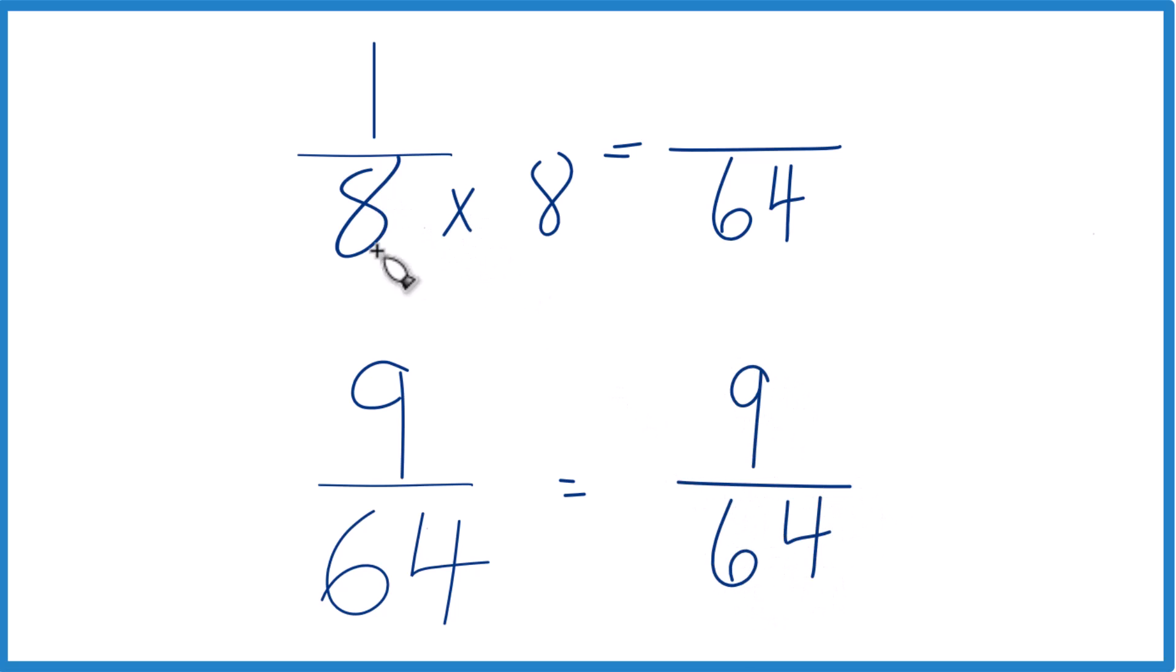But we can't just multiply the denominator here by 8. We also have to multiply the numerator by 8 as well. That's because 8 over 8 is 1. So we're not changing the value, we're just changing the way it's represented. We're multiplying by 1. 1 times 8, that is 8.